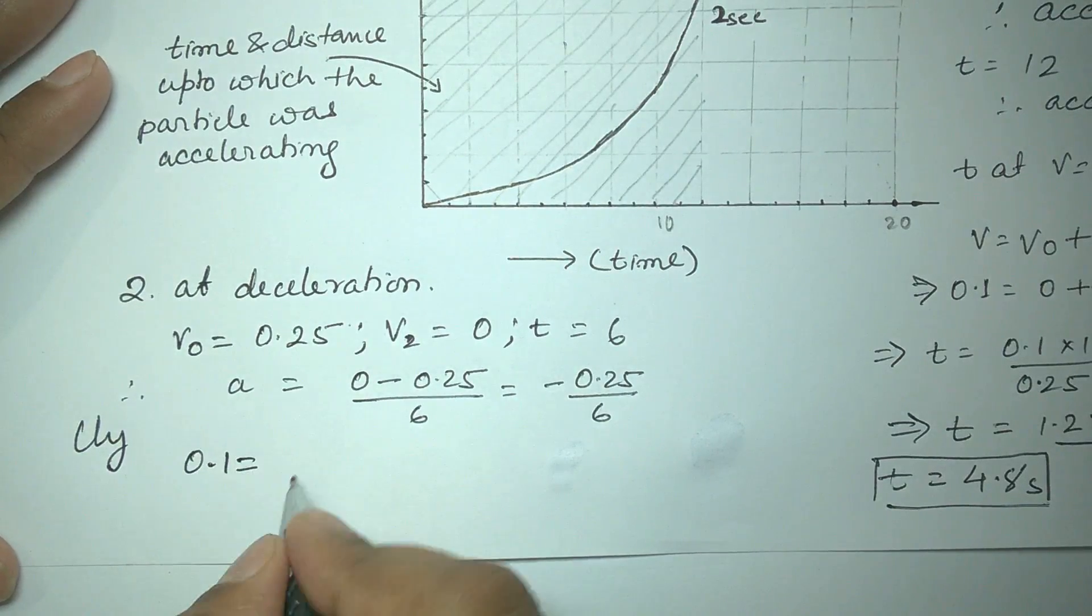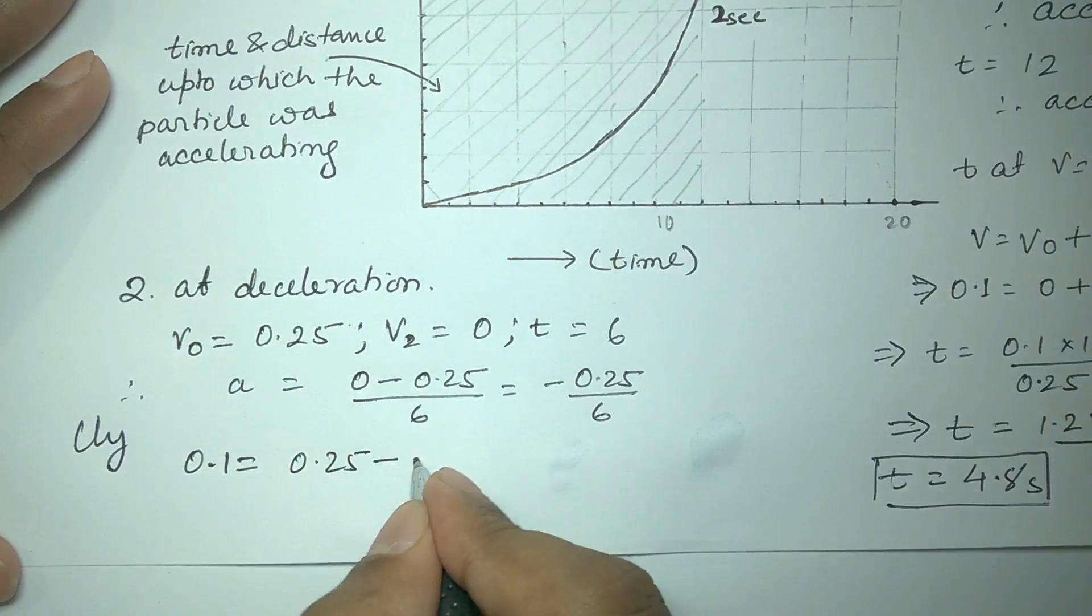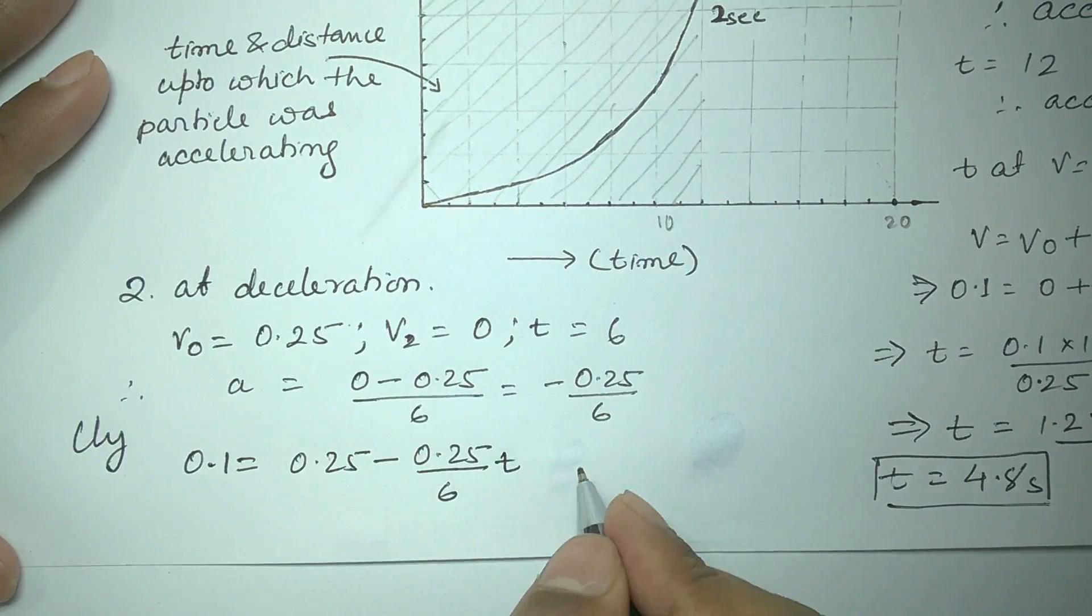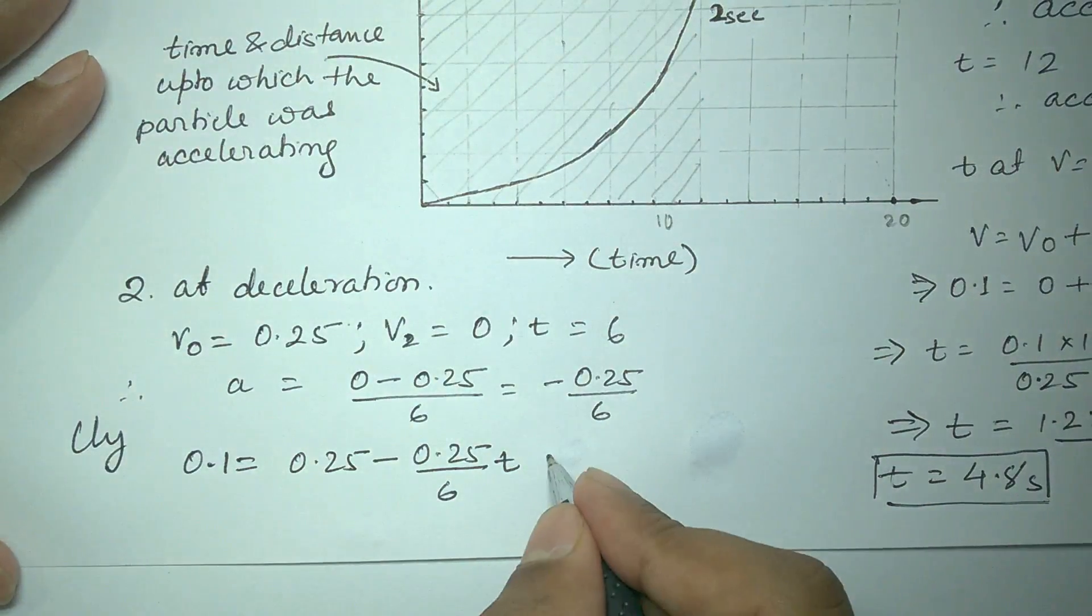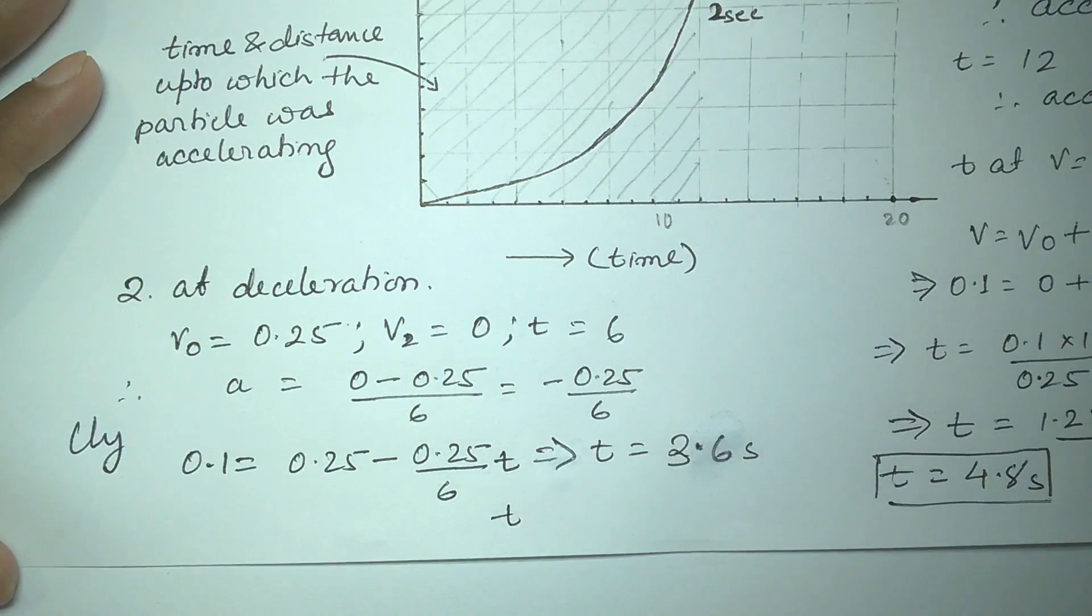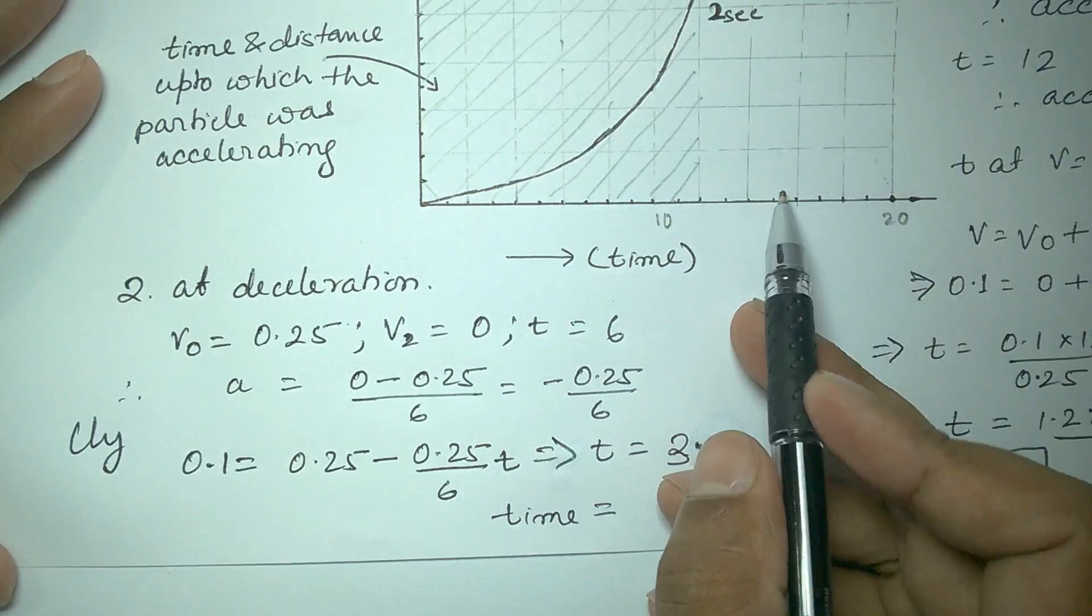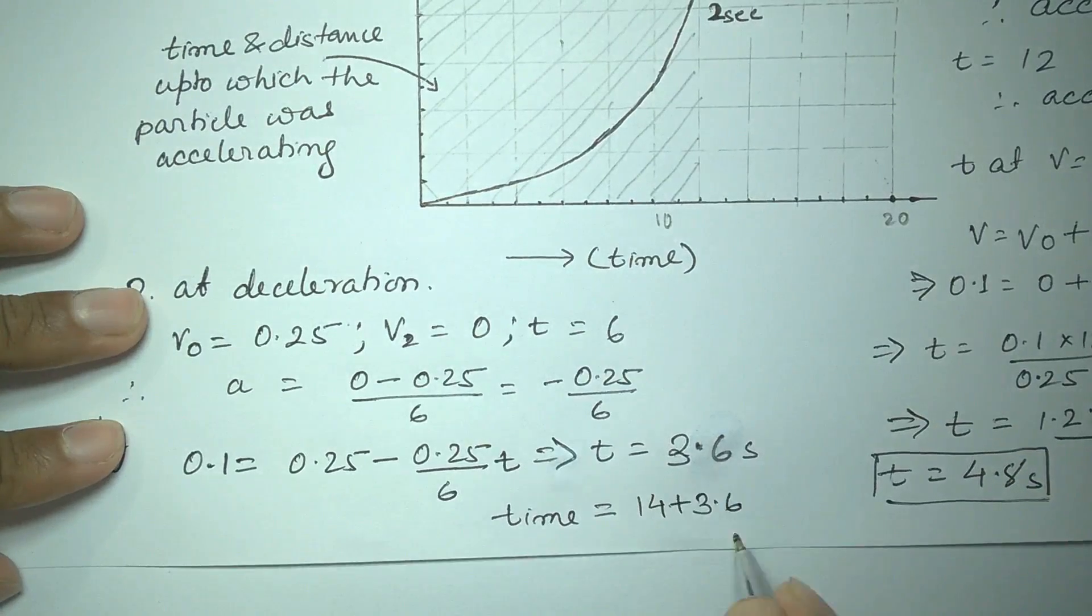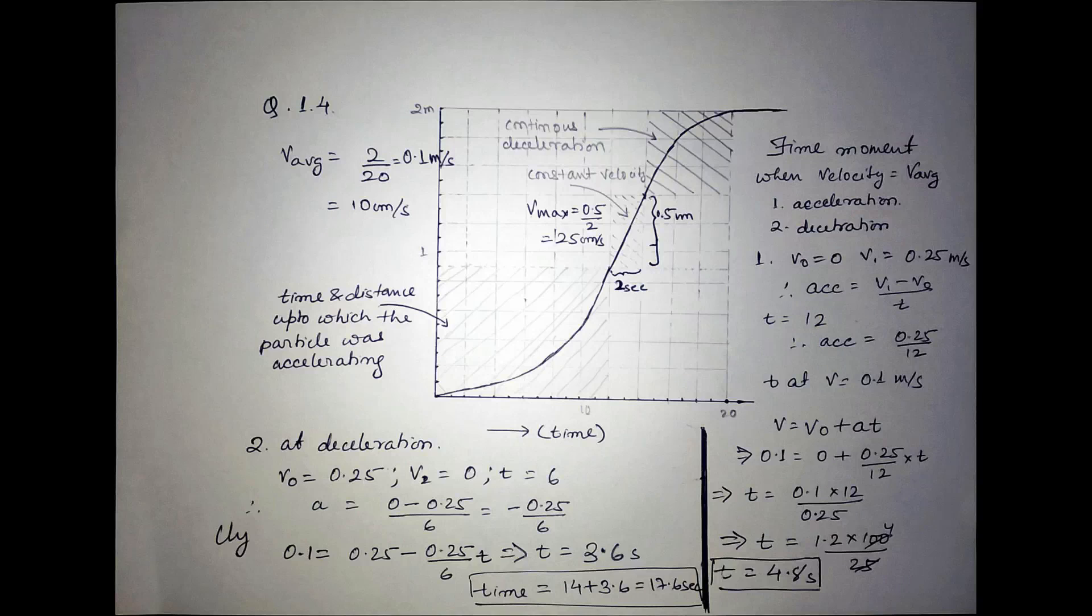Again applying motion formulas using similar methodology as was done previously, we will get time which is equal to 3.6 seconds from the beginning of the third region. 14 seconds will be added to 3.6 to get the final value of 17.6 seconds.